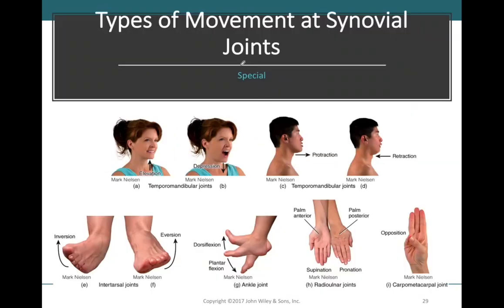Special movements are our last group found at synovial joints — these movements don't really fit into any of the other groups. Some special movements are elevation and depression, protraction, retraction, inversion, eversion, dorsiflexion, plantarflexion, and opposition. Supination and pronation are also classified with the special movements.